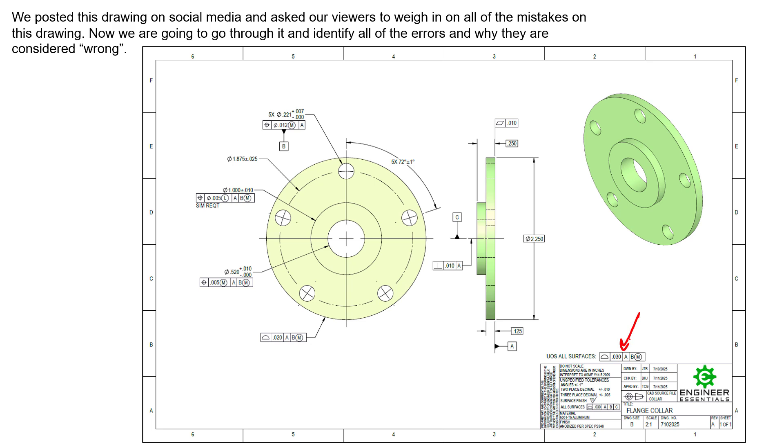The next thing we'll talk about here is datum feature C. The datum reference symbol for datum feature C is identified right here. This is outright illegal. We cannot put the datum feature symbol on the center line for this feature because there's a handful of features technically that could create that center line. By simply applying it to the center line, we don't know if that center line is for the ID or this small OD or maybe for this large OD. Each one of those features has a center line at that location, but in the real world they're going to deviate in position a little bit so they'll all have different axes locations.